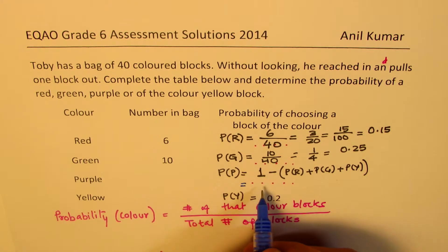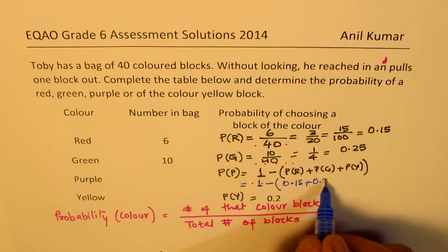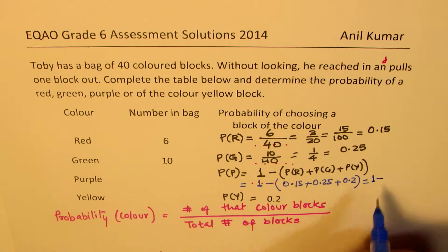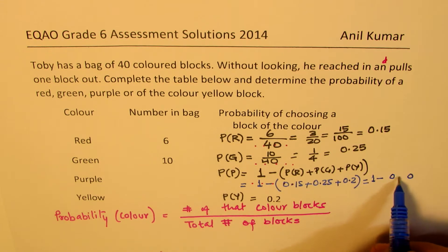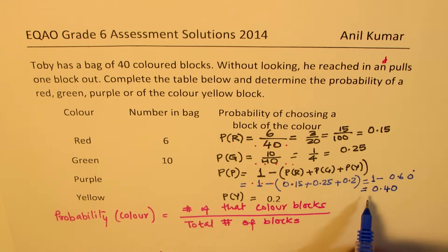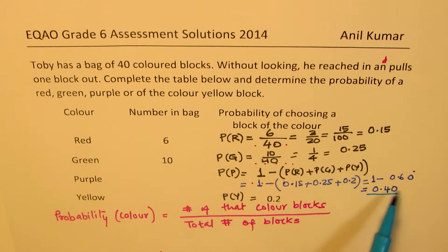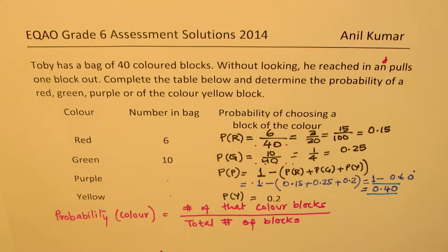Let's find the answer now. We have 1 minus: probability for red is 0.15, probability for green is 0.25, probability for yellow is 0.2. Adding them up gives 0.60. So 1 minus 0.60 equals 0.40. The probability for picking up purple is 0.40, or 40%.